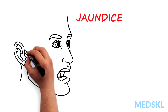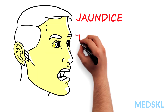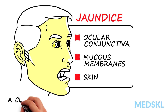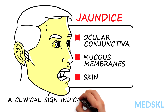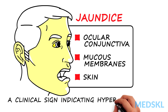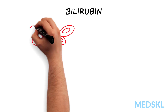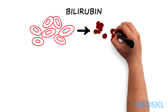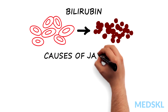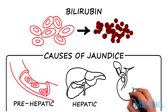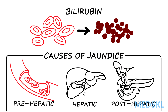Jaundice is the yellow discoloration of the ocular conjunctiva, mucous membranes and skin. Jaundice is a clinical sign indicating hyperbilirubinemia, and the terms are often used interchangeably. Bilirubin is a normal breakdown product of hemoglobin, and jaundice can be thought of as pre-hepatic, hepatic and post-hepatic causes.